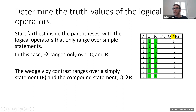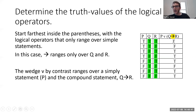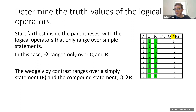Look at Q and R, look at their truth values on each line, and determine whether the arrow is true given those truth values. The arrow is true in every case except where the antecedent is true and the consequent is false — in every other case it's true. So we get these truth values for the conditional. I'll assume you know how to generate truth values for conditionals.